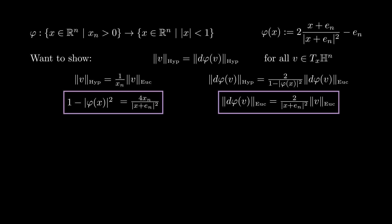We then combine these two expressions to obtain that the hyperbolic norms of v and d phi v are the same. This proves that phi is an isometry between the two models that we have for the hyperbolic space.